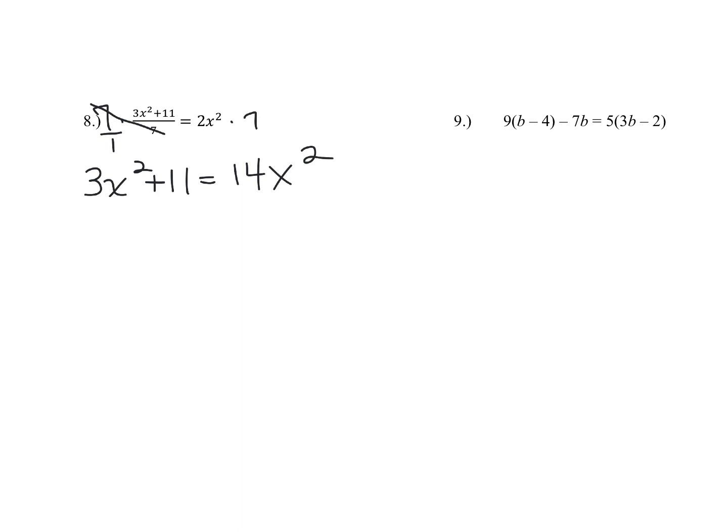Now this step, once you've gotten rid of that fraction bar, now you can collect your variables from one side to the other. My advice, subtract three x squared from both sides first, because if you subtract the 14 x squared, you'll have zero on this side. So it's good to keep something on one side of your equal sign. So canceling that out, you get 11 equals 14 x squared minus 3 x squared gives me 11 x squared.